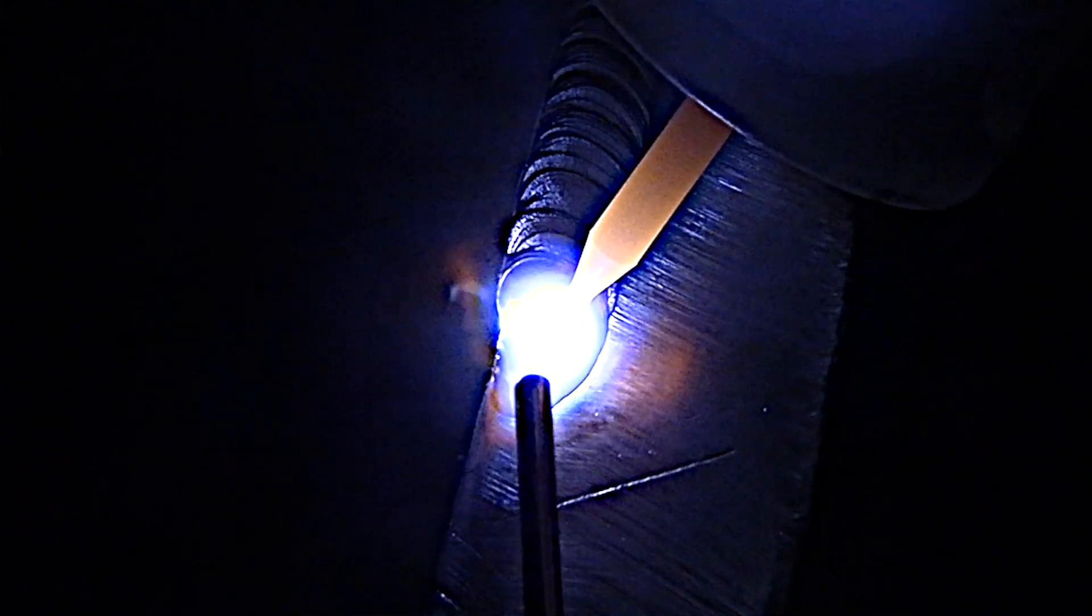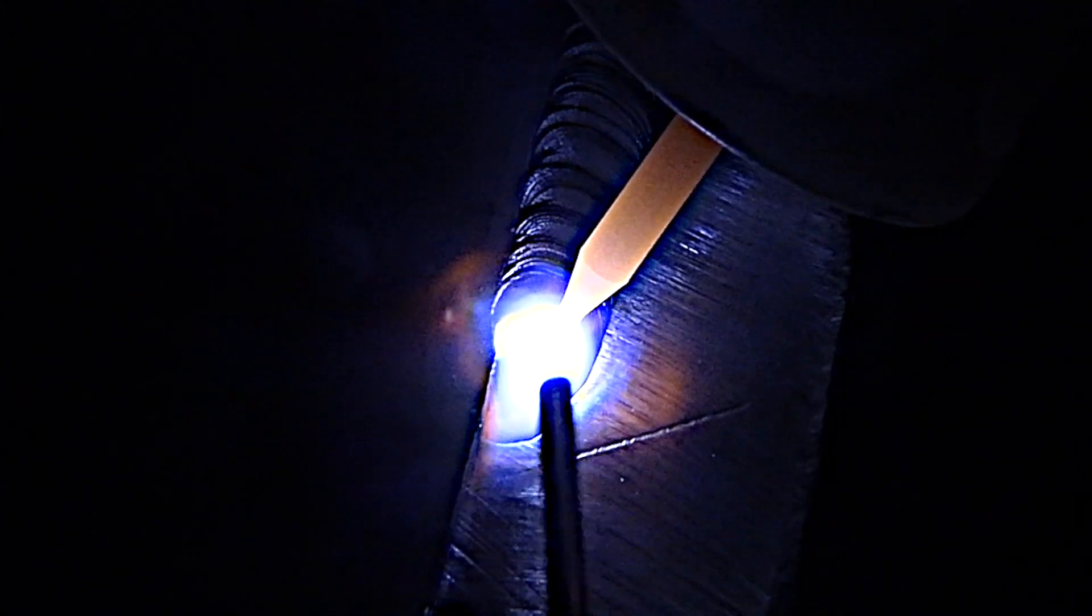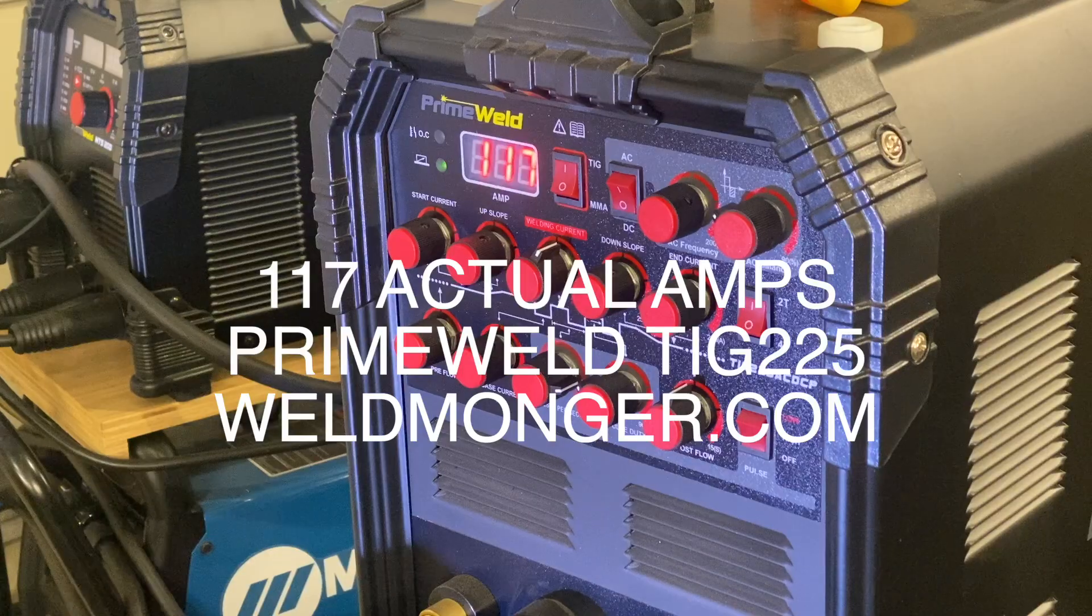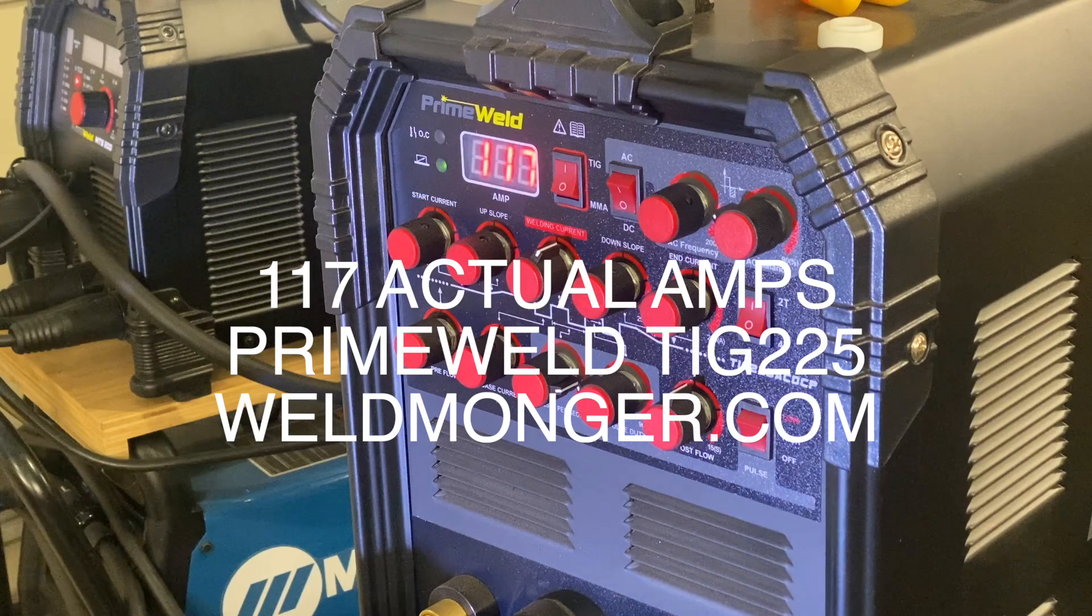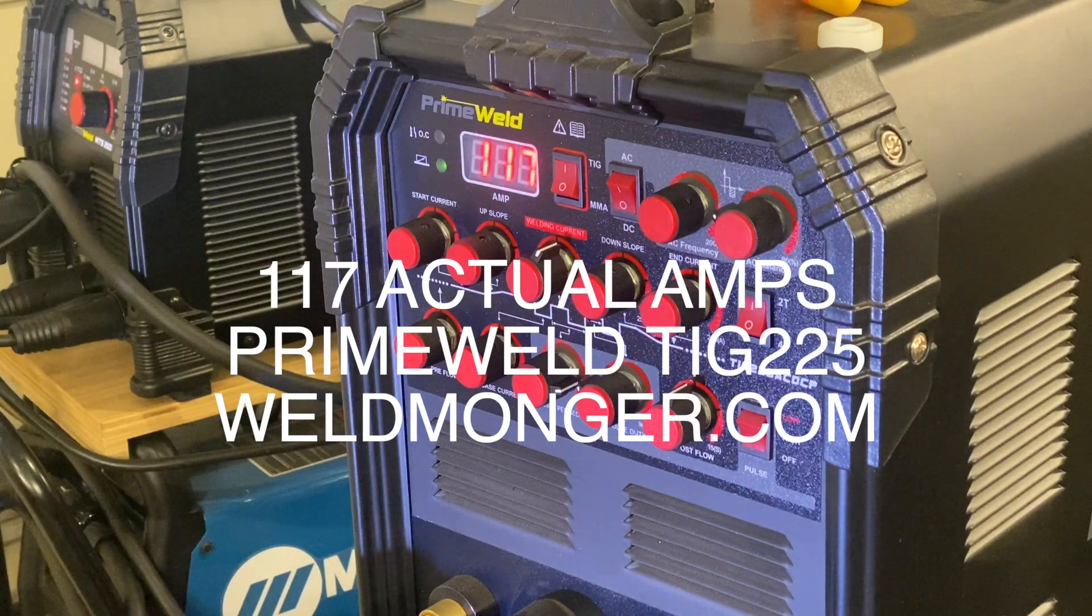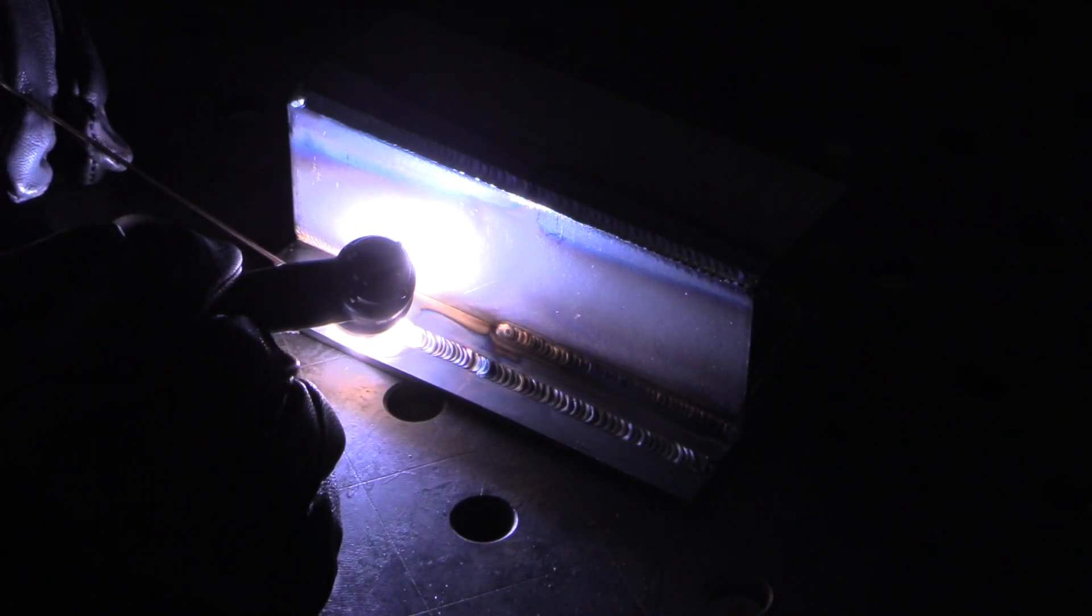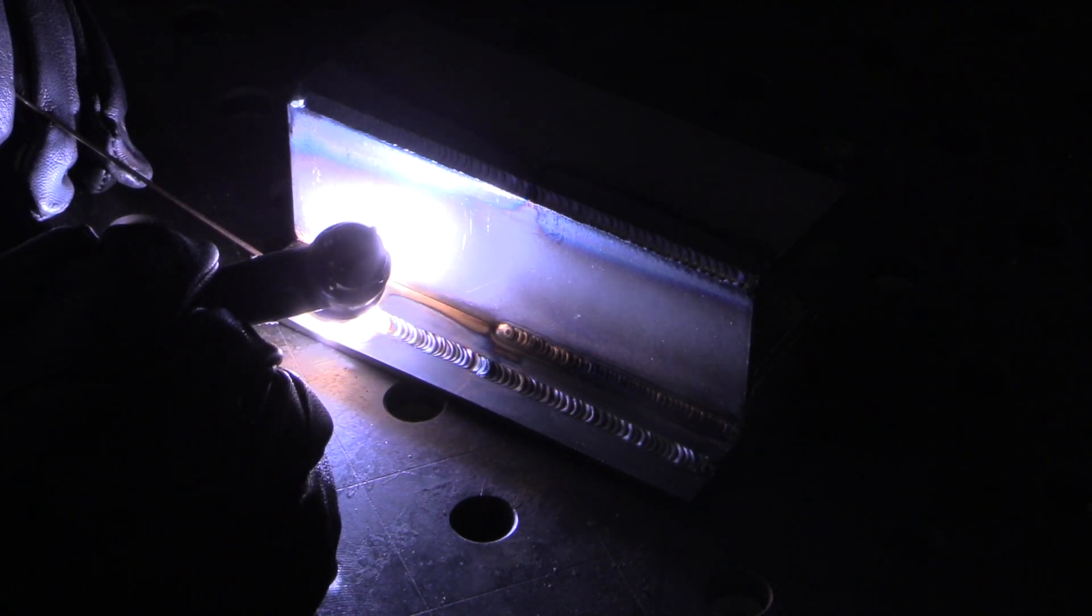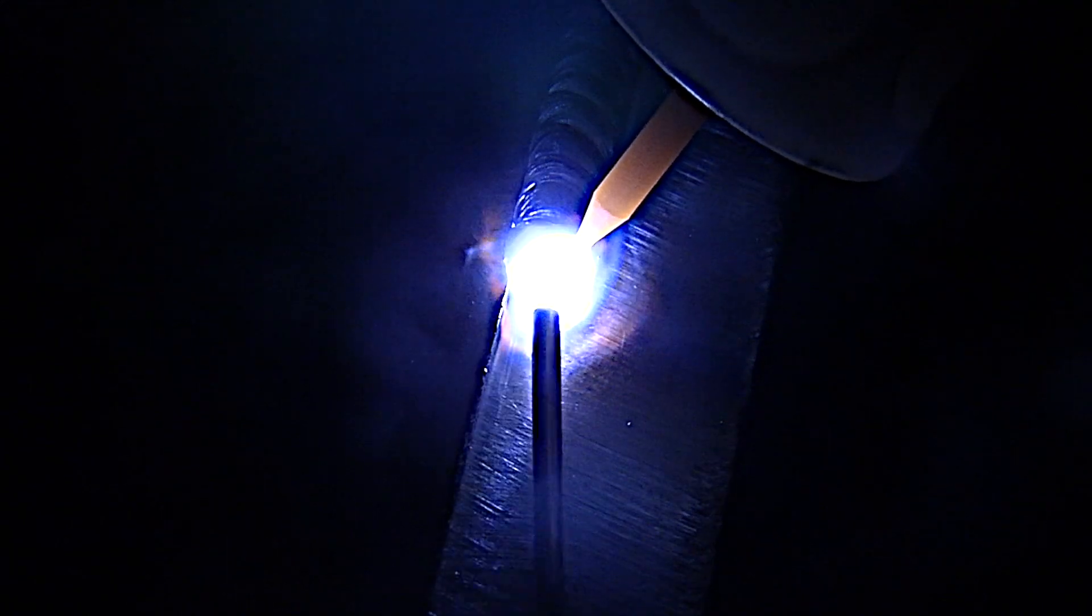When you're learning to TIG weld, I think practicing restarts is a really good idea. Like on a joint like this, just running no more than an inch at a time and then practicing a restart and getting to where you kind of can't tell where you stopped and started is a great exercise. Because when you can do a restart without any problem...